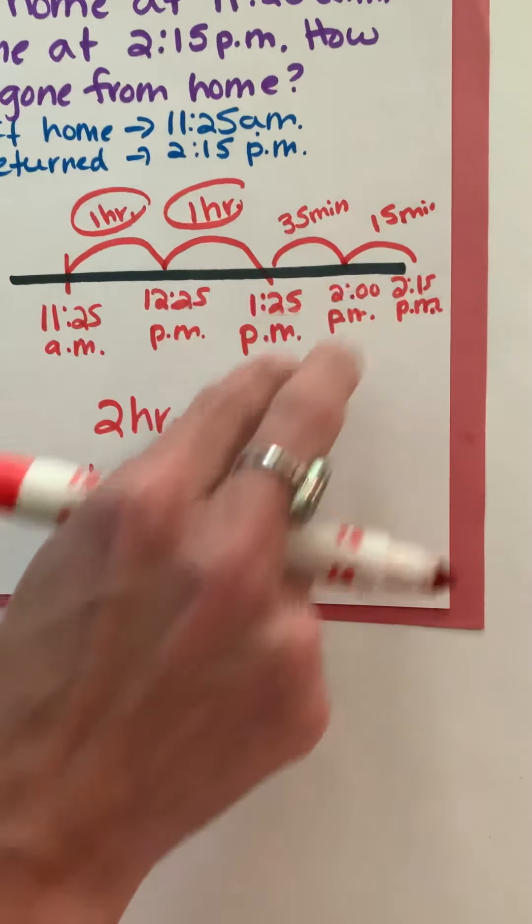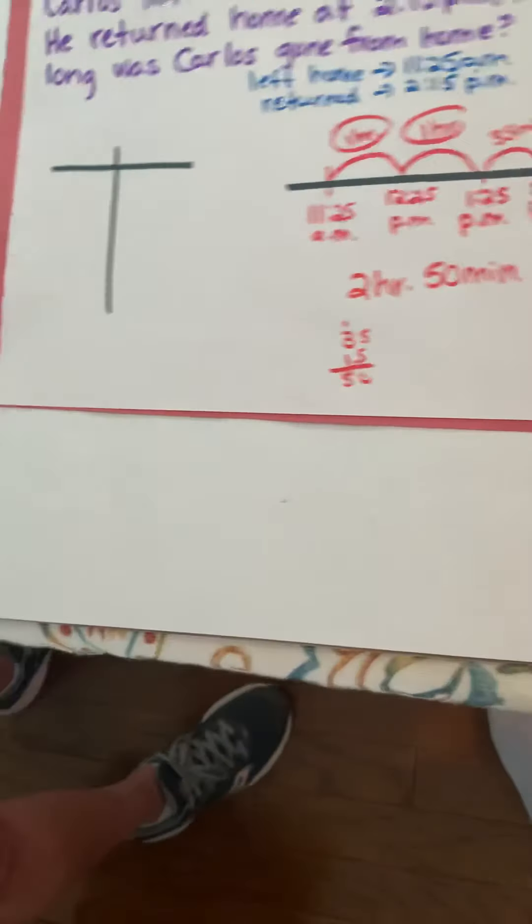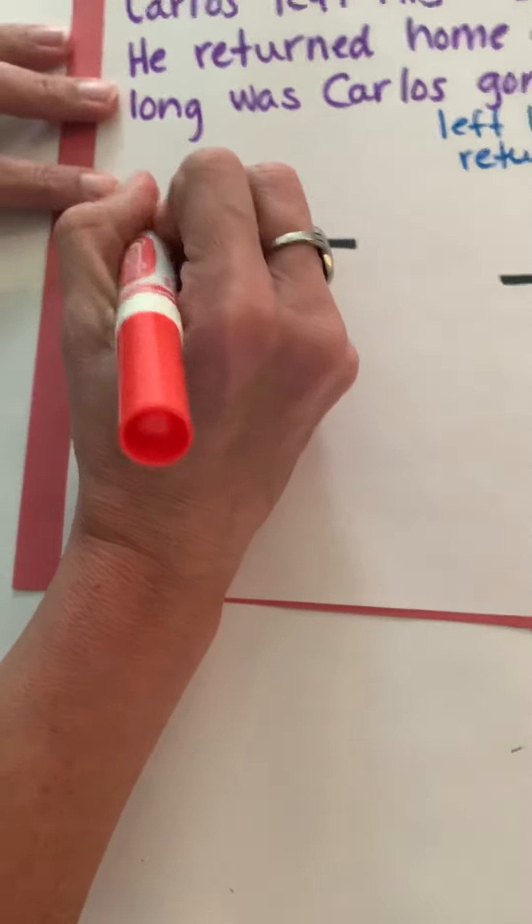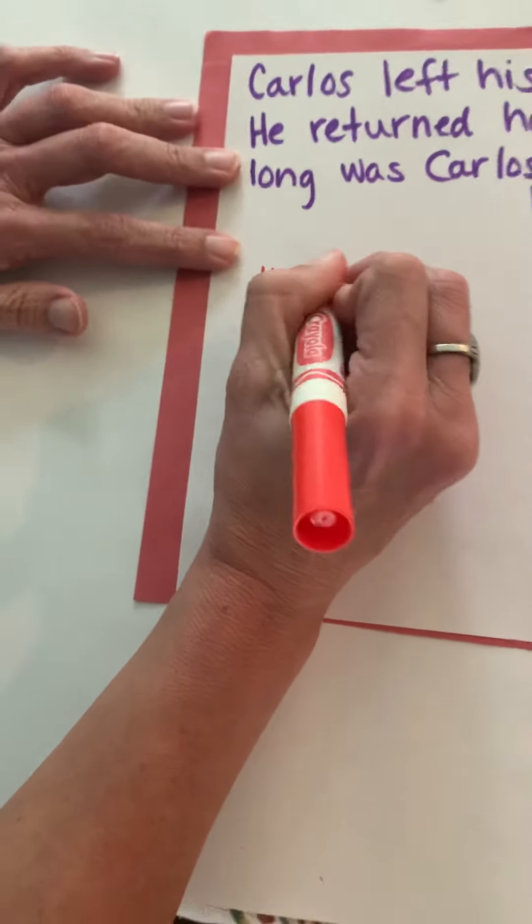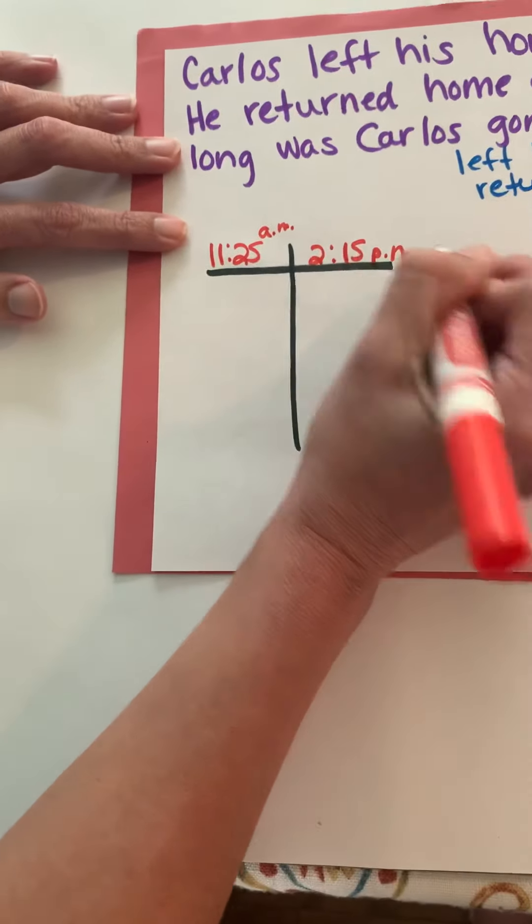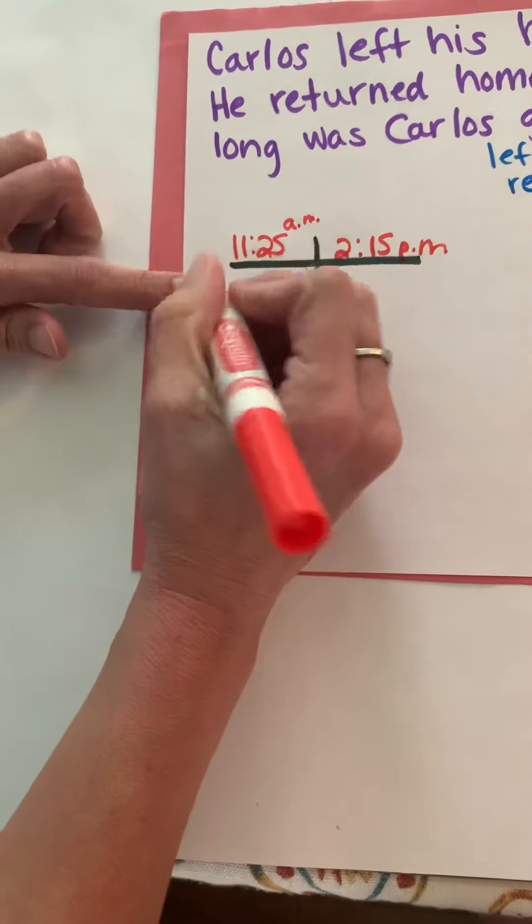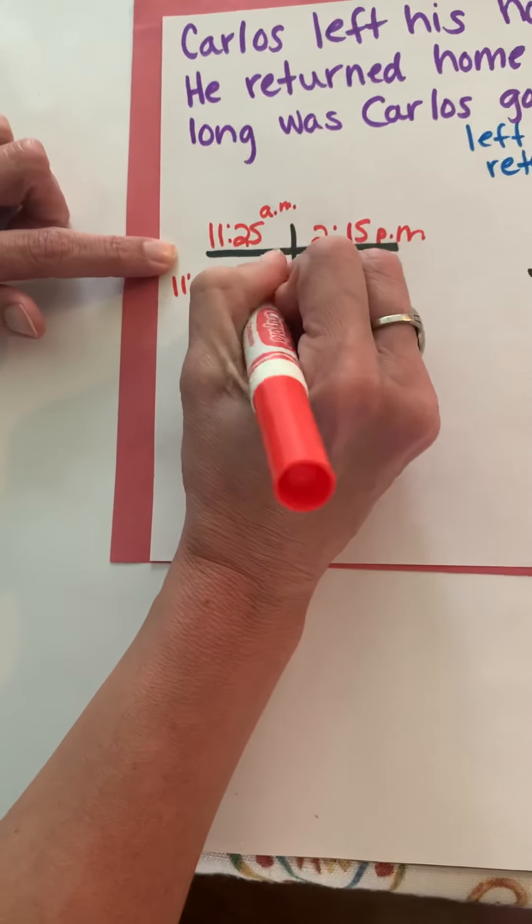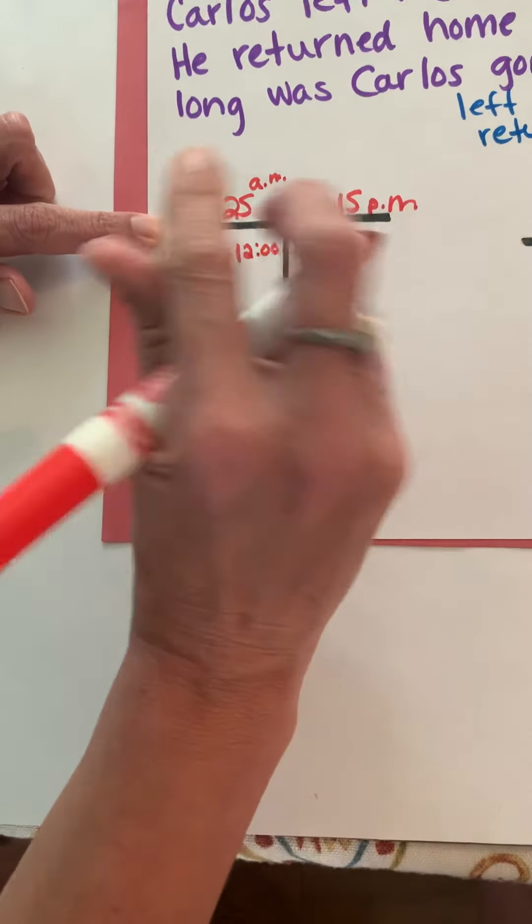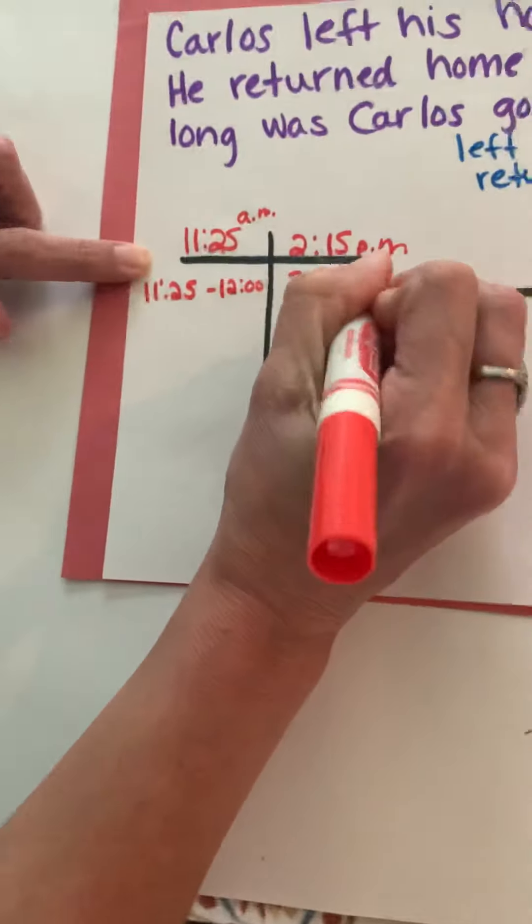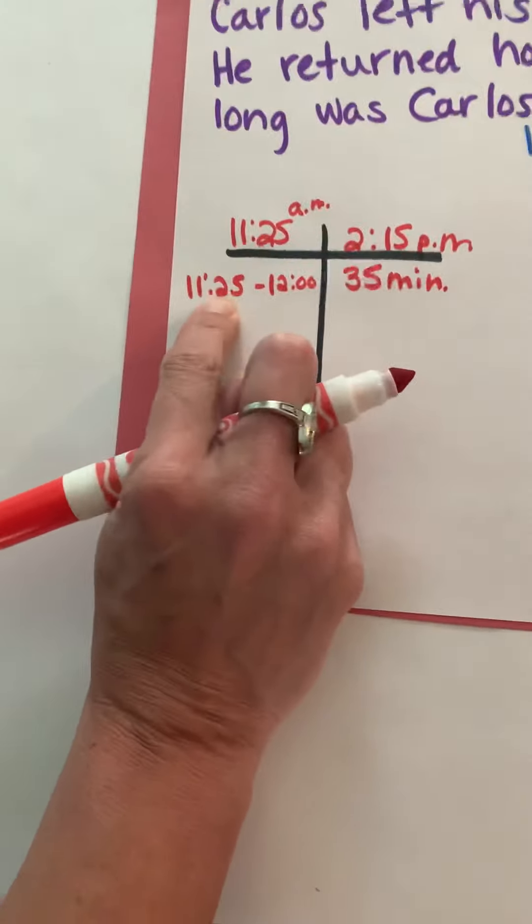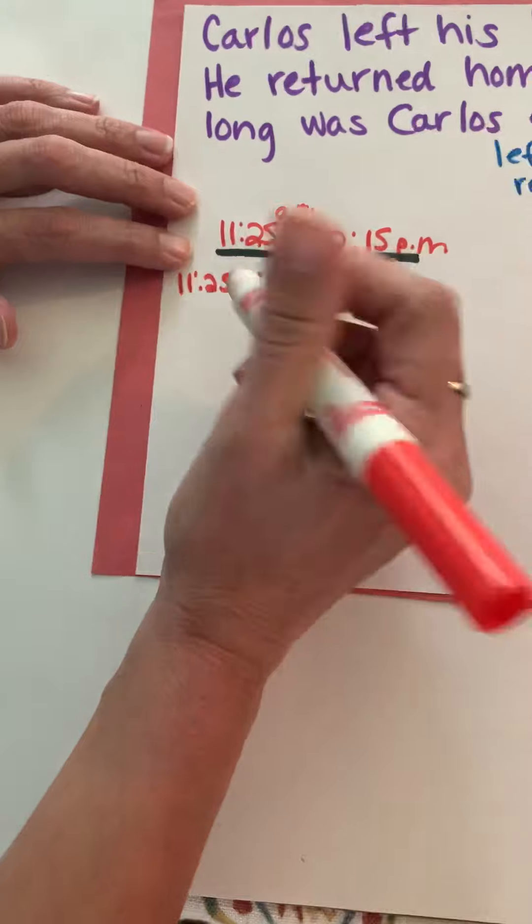So now let's look at solving it using a t-chart. If I am leaving at 11:25 a.m. and I'm going to return at 2:15 p.m., then what I'm going to do is from 11:25 and I'm going to solve it differently this time. I'm going to go ahead and just get to 12 o'clock and I know from earlier that's 35 minutes because 11:25 to 11:30 is 5 minutes, 11:30 to 12 is 30 minutes. That's 35 minutes.